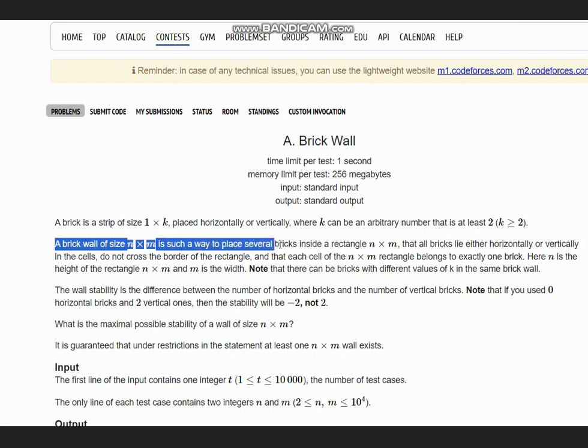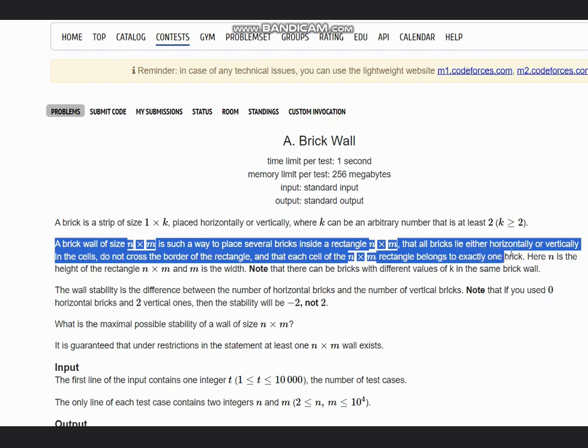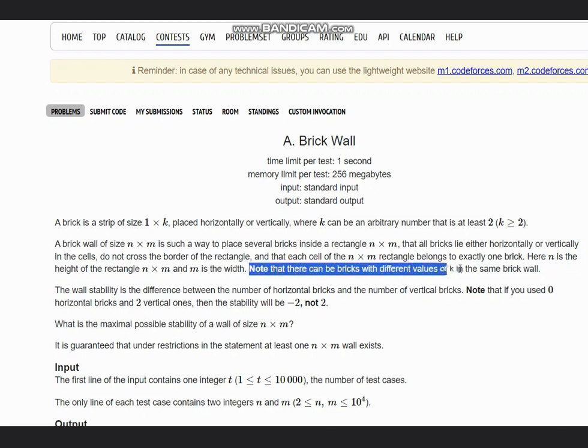The rectangle n×m means all bricks lie either horizontally or vertically in the cells, do not cross the border of the rectangle, and each cell of the n×m rectangle belongs to exactly one brick. Here n is the height of the rectangle n×m and m is the width. Note that there can be bricks with different values of k in the same brick wall.